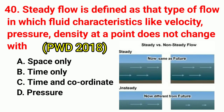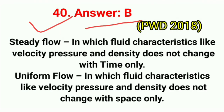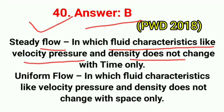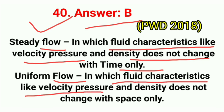Question No. 40. Steady flow is defined as that type of flow in which fluid characteristics like velocity, pressure, and density at a point do not change with? Correct answer is option B: time only. Steady flow is that in which flow characteristics like velocity, pressure, and density do not change with time only.